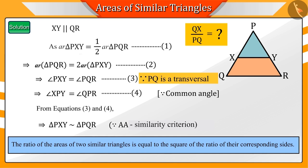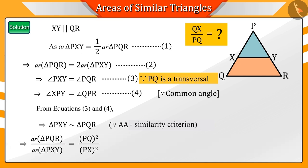Since we know that the ratio of the areas of two similar triangles is equal to the square of the ratio of their corresponding sides, hence, from triangles PXY and PQR, we see that the ratio of their areas will be equal to the square of the ratio of their corresponding sides, PX and PQ.